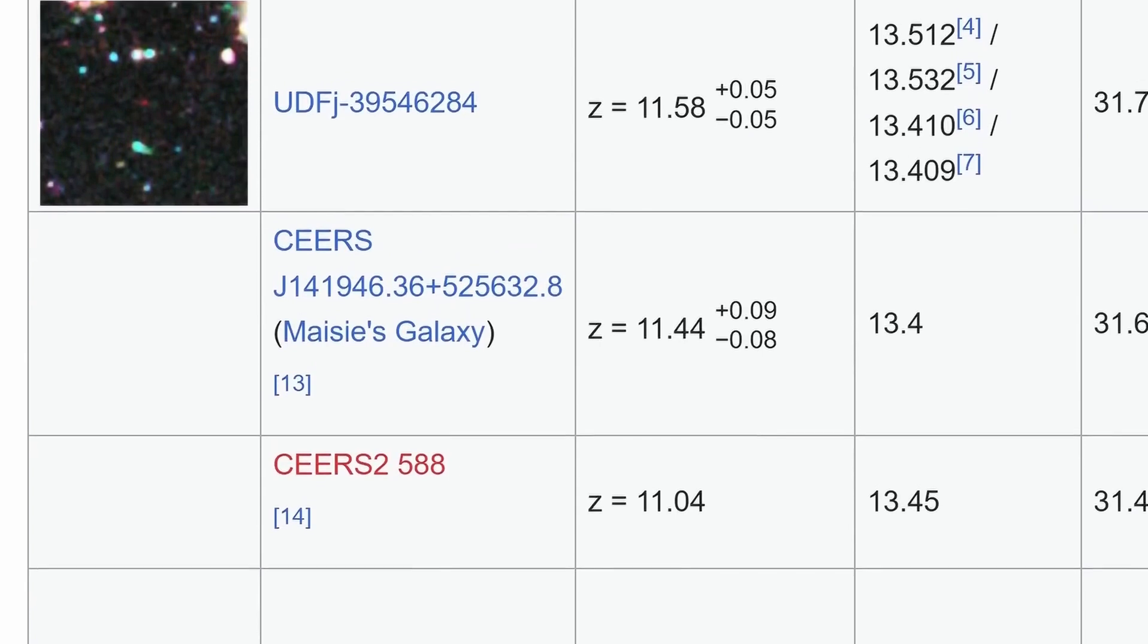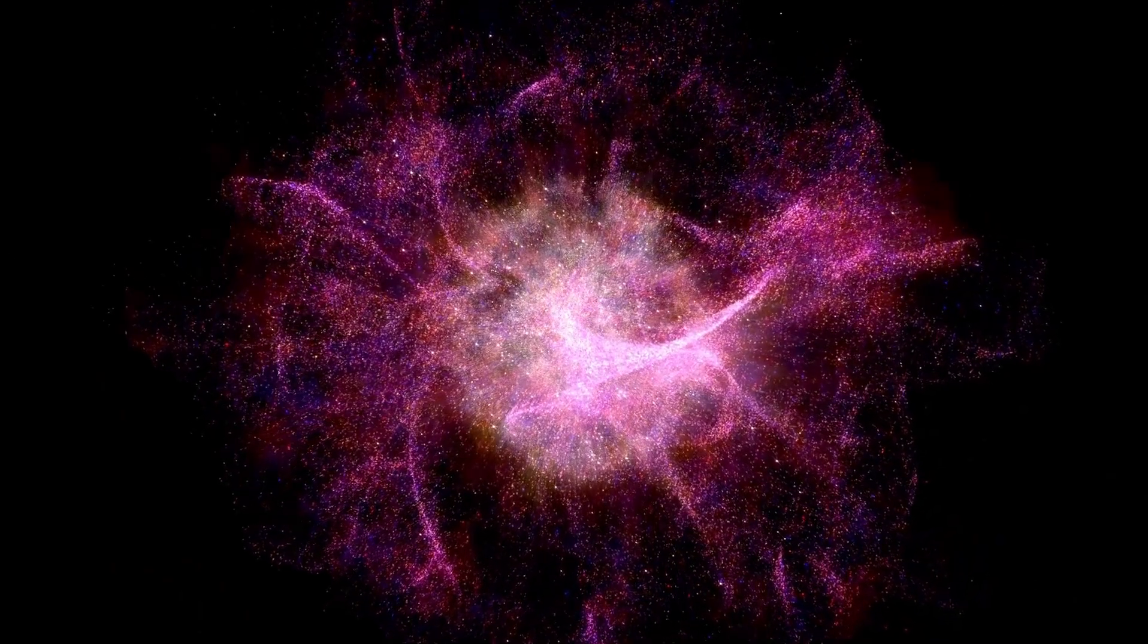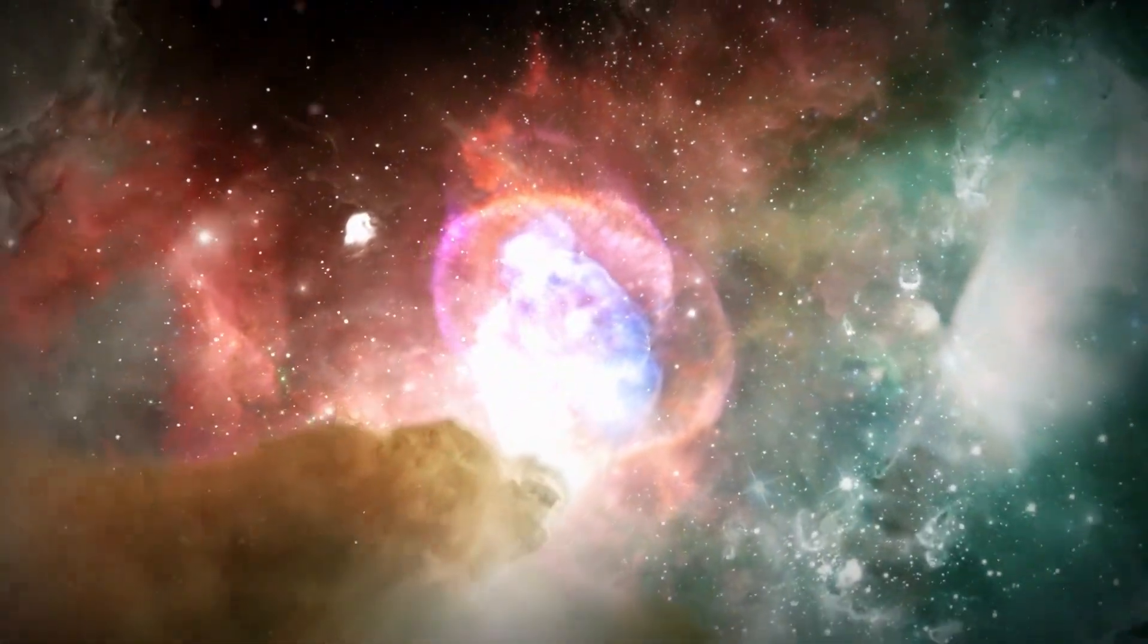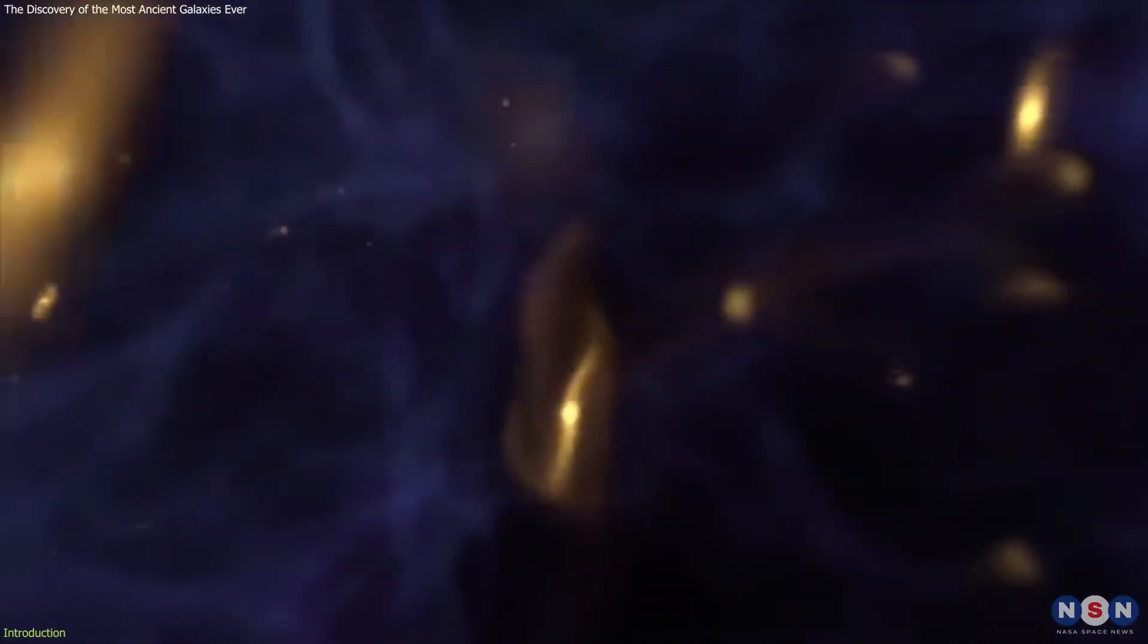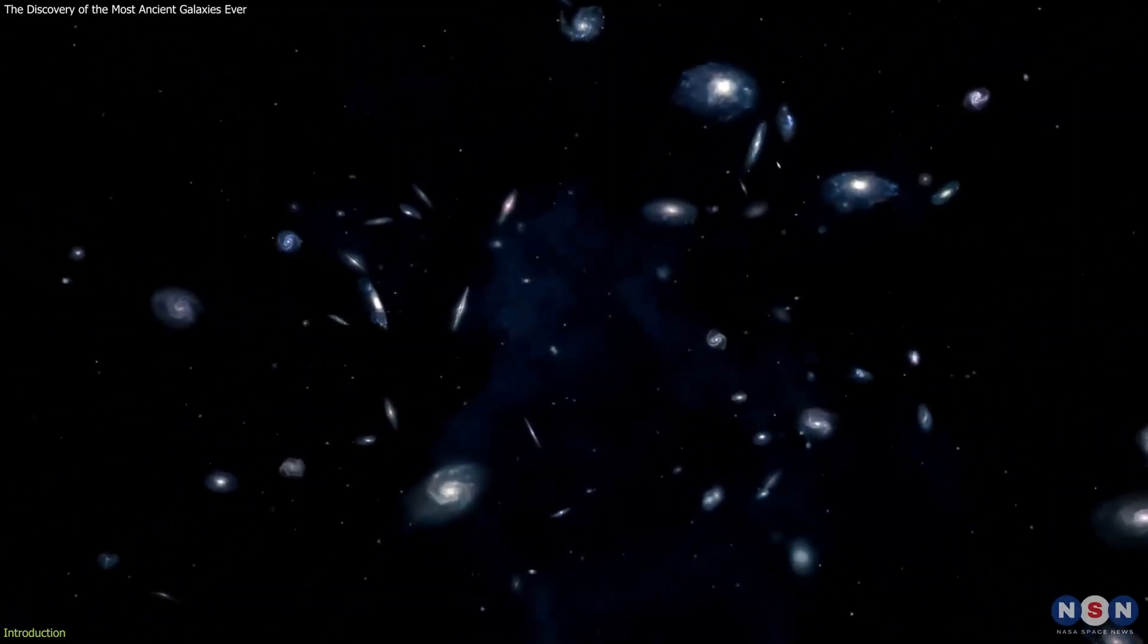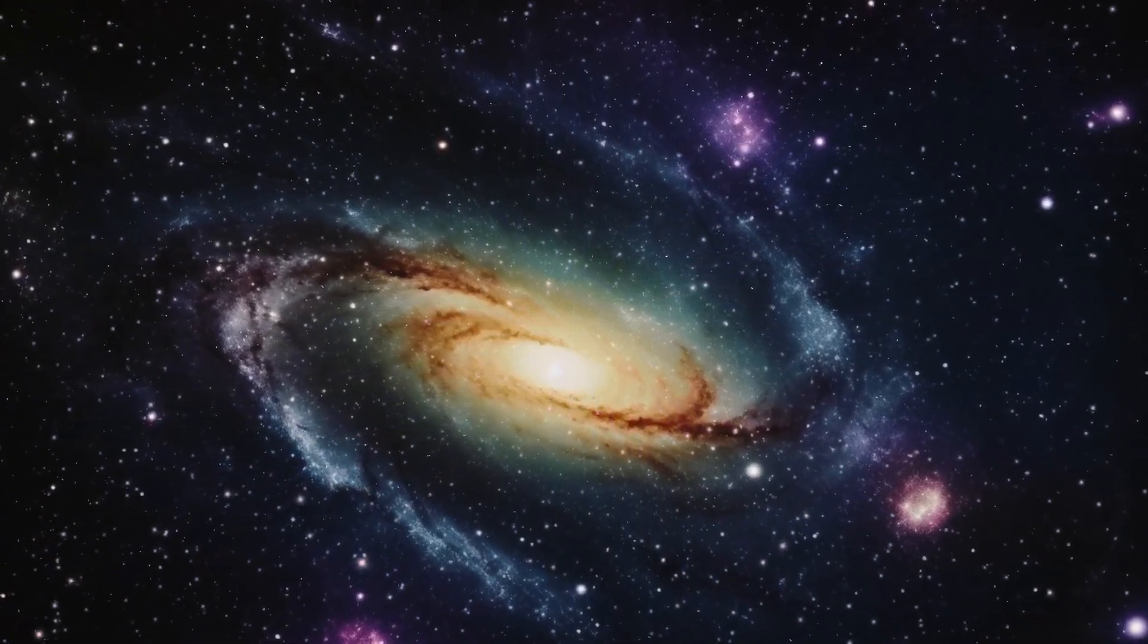But JADES-GS-z14 isn't just remarkable for how distant it is from Earth and how early it existed in the cosmos. With a width of around 1,600 light-years across, this cosmic dawn galaxy is also remarkable for how big and bright it is. The extreme brightness of JADES-GS-z14 and the fact this luminosity is powered by young stars means this galaxy represents the most striking evidence for the rapid formation of large, massive galaxies in the early universe found thus far.